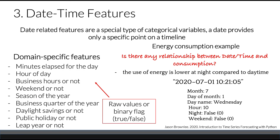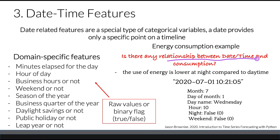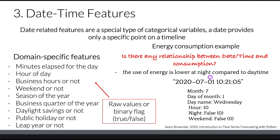Date-time related features are a special type of categorical variable representing a specific point in our timeline. To engineer a date feature properly, we need domain knowledge or a deeper understanding of the problem. For instance, studying energy consumption time series, we might ask whether there is any relationship between date-time and consumption. Based on prior knowledge, energy use is lower at night compared to daytime, so a binary night feature would be appropriate to add.